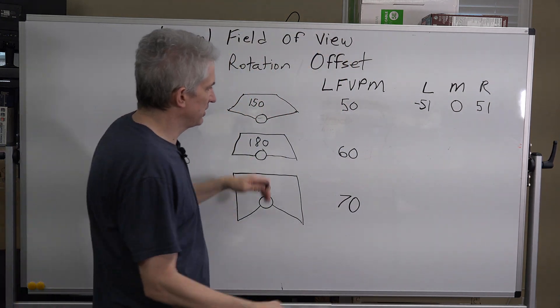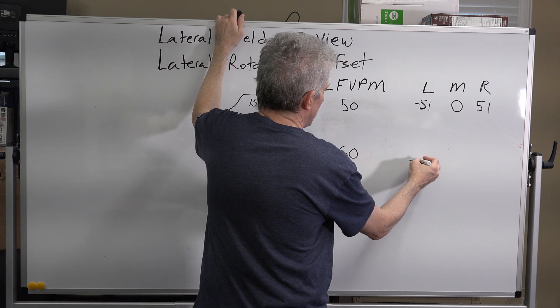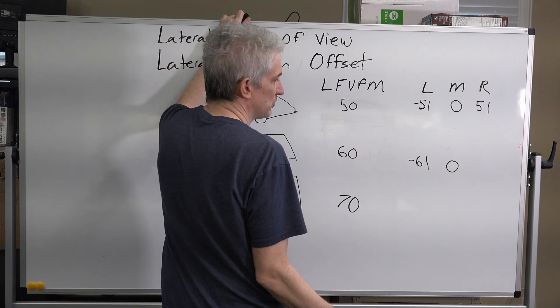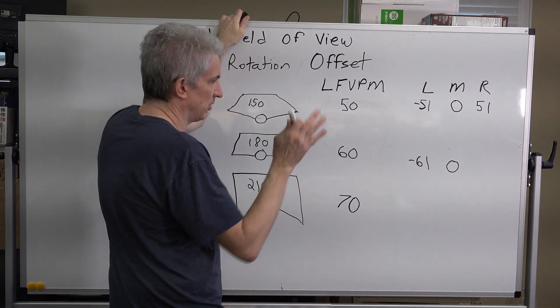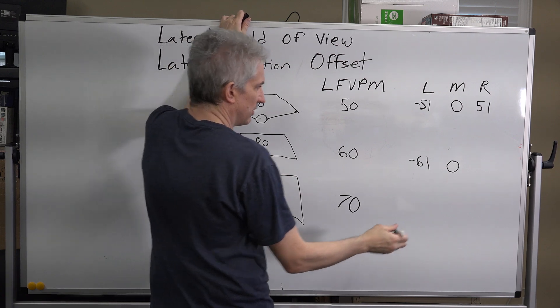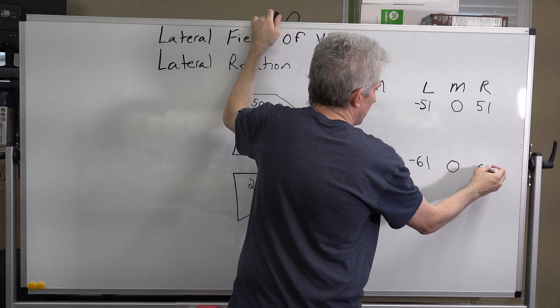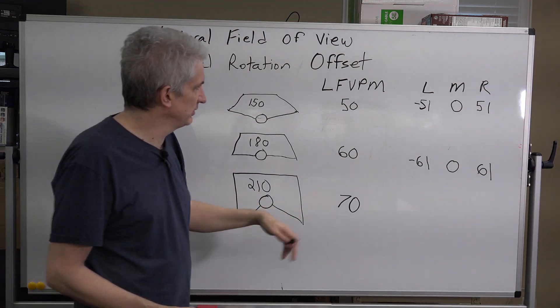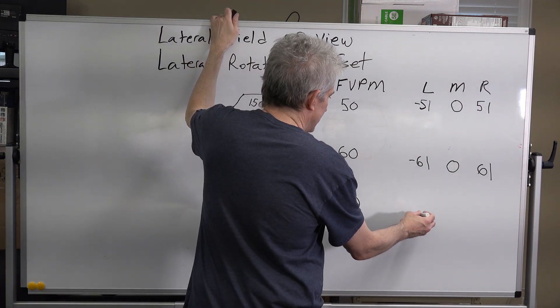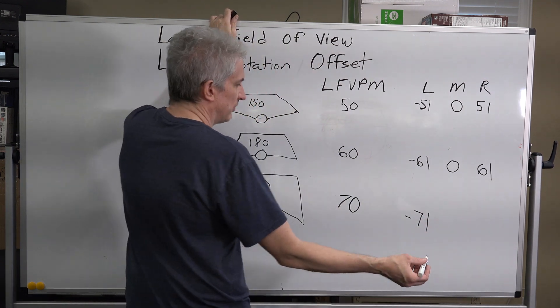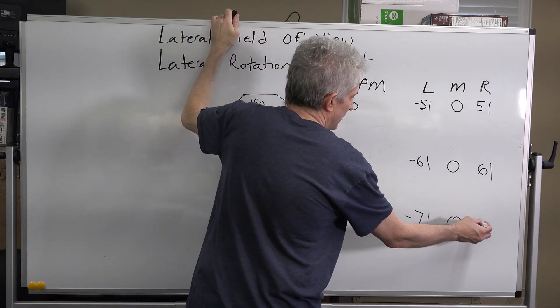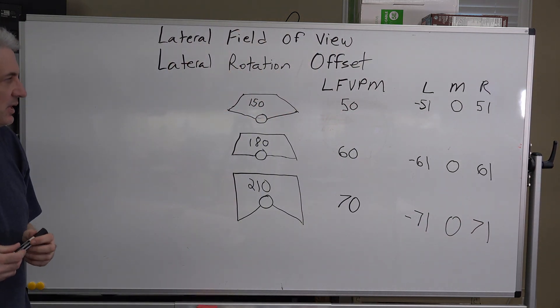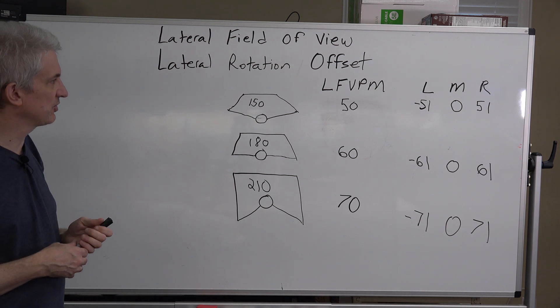And I bet you can guess what the others are here. On the left monitor in this situation, negative 61, zero, because we don't want to rotate the middle monitor at all. It's straight in front of us. So no rotation on that. And over here, on the right monitor, 61. Lastly, on this one, left monitor, negative 71. I apologize for my handwriting. Zero, and then 71 on the right monitor.